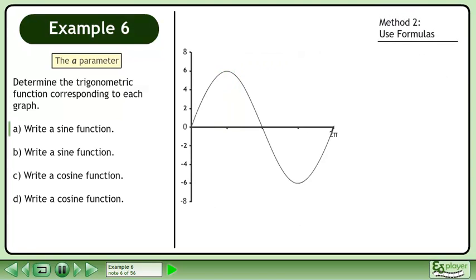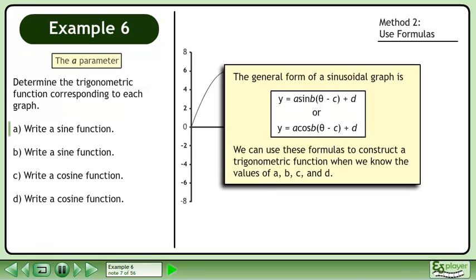In method 2, we'll use formulas to get the sine function. The general form of a sinusoidal graph is y equals a sine(bθ - c) + d, or y equals a cos(bθ - c) + d. We can use these formulas to construct a trigonometric function when we know the values of a, b, c, and d.